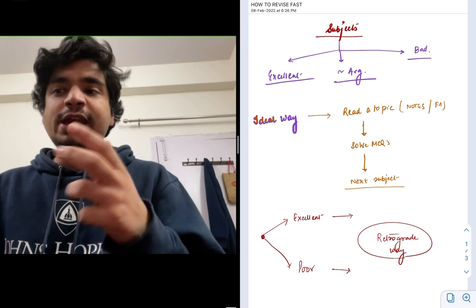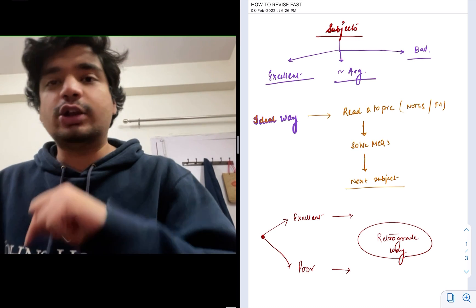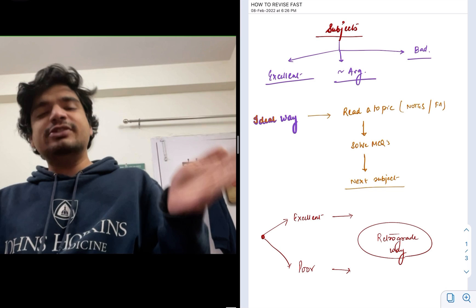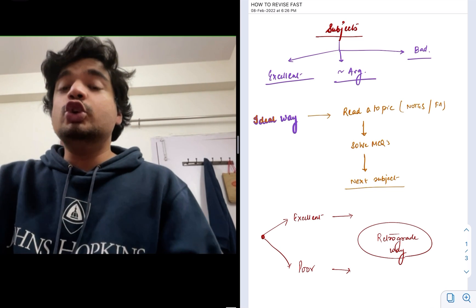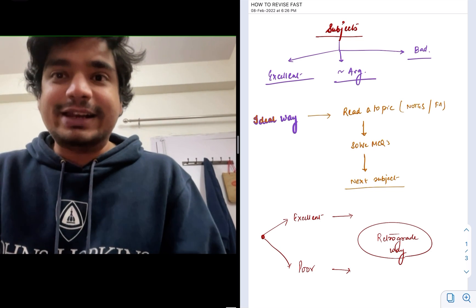In this scenario, the way to go about this is called the retrograde way. Instead of reading something first and then attempting MCQs, you can make it retrograde. You do the MCQs first and then read the topic.